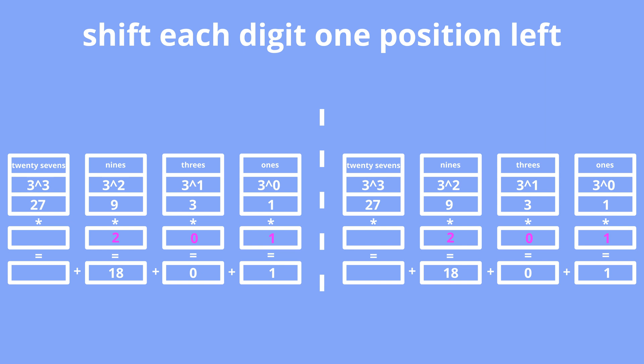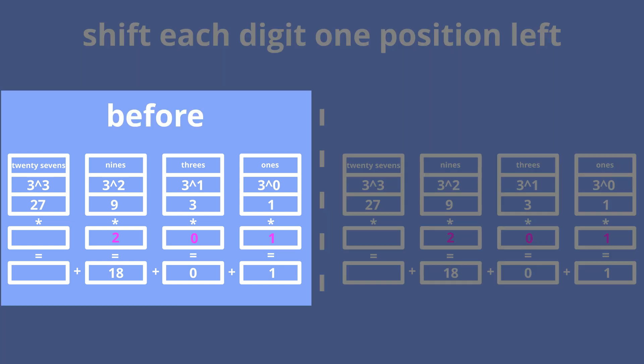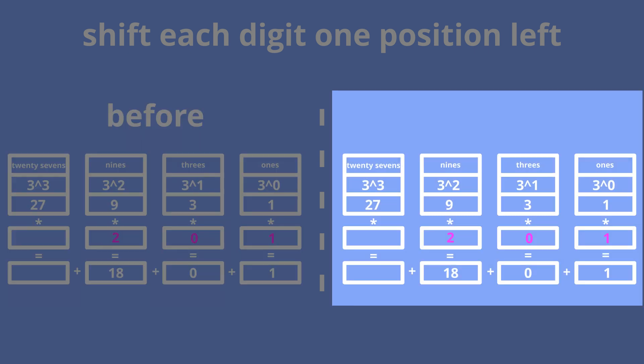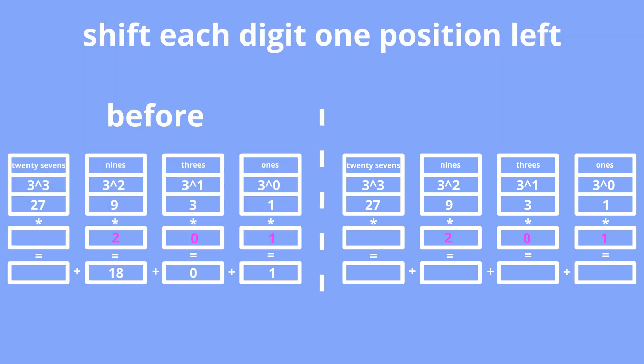Let's consider an example of left shifting number 201 in the base 3 number system. On the left is the number before the shifting, and on the right will be the number in process and after the shifting. Initially, digit 2 was in the 9s position, so it represented 18.